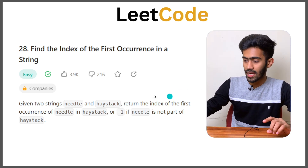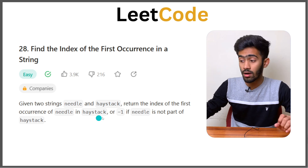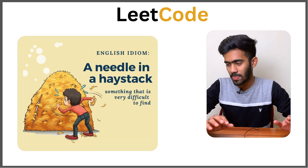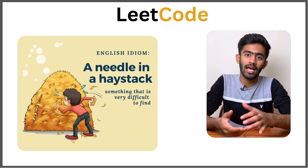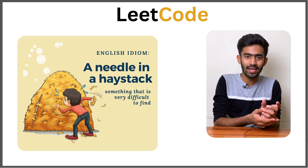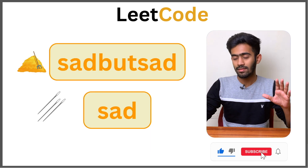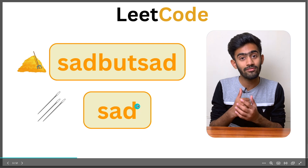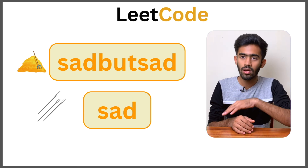We are given two strings: a needle and a haystack. We must return the index of the first occurrence of the needle in the haystack, or minus one if the needle is not part of the haystack. This question is based on the idiom "a needle in a haystack" — it is very difficult to find a tiny needle in a big haystack. In this example, the haystack is "sad but sad" and the needle is "sad," the substring we want to find.